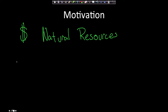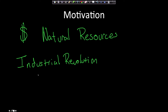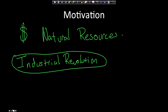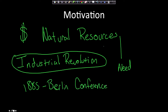Europe was in the midst of the Industrial Revolution and therefore in need of natural resources. So in 1885, they set up the Berlin Conference. The Berlin Conference was a meeting where European countries came together and decided to split up African territories amongst themselves.